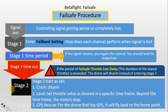But hold on — there is another protection here called the failsafe throttle load delay. It simply means how long your throttle is at 0% after the signal is lost. If your throttle is at 0% longer than this time period, it will not enter into Stage 2 — the quadcopter will simply disarm and fall from the sky. That's the extra protection. If the failsafe throttle load delay is not the case and Stage 1 time is out, then the failsafe will enter into Stage 2.